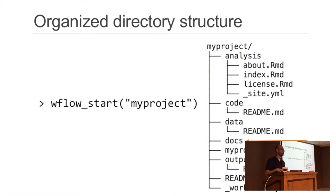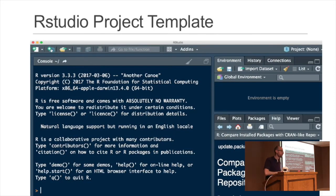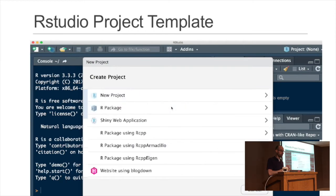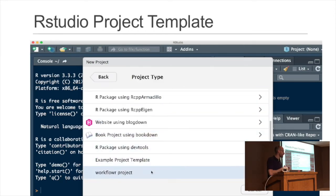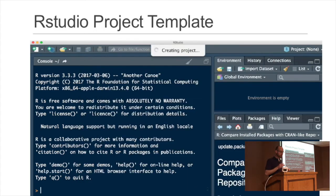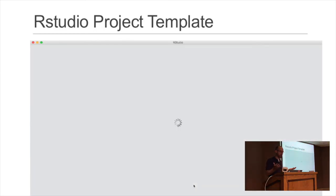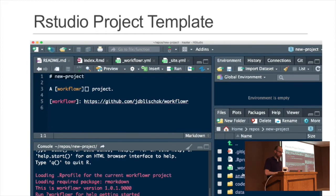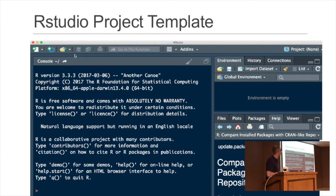You don't have to start from scratch — you can give workflow_start the name of an existing project and it will add the WorkflowR infrastructure to it. If you're an RStudio user, you can use a project template directly from the IDE, which has the added benefit of opening up the RStudio project immediately, so you'll see everything set up in the files pane.